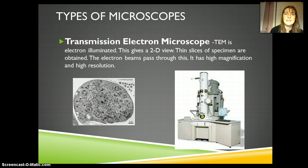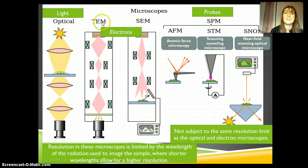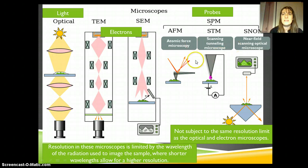For electron microscopes, you can't take images of things that are currently alive because they have to go through so much preparation. So if you're looking at something alive, a light microscope will be better. All these microscopes are just good at different things. We've got light microscopes, TEM (transmission electron microscope), SEM (scanning electron microscope), and if we want to go even smaller we can use probes. Those are able to take images of really, really small stuff, and if you're interested in technology you should look more into these probe-type microscopes.